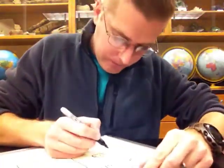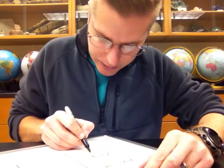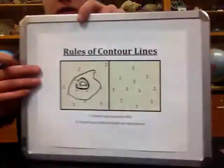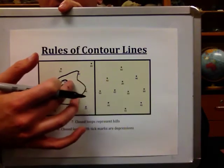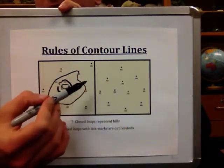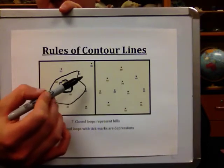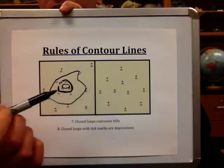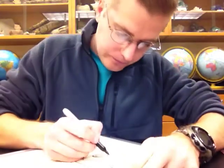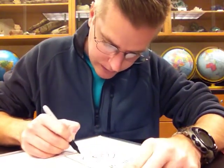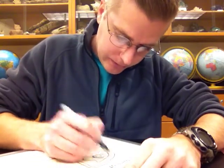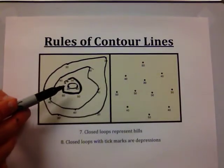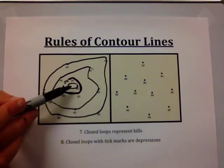We'll make the line for 40 by connecting all the dots with an elevation of 40. Try to have smooth lines — how exactly the line curves between points is somewhat up to you if no additional elevation points constrain it. Then the last one here are points for 30. When it's a hilltop, this is what it looks like: closed loops where elevation increases as you move toward the center, meaning this is the hilltop in the center.